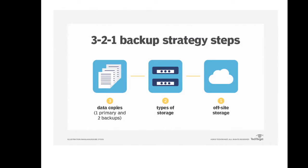Here's the 3-2-1 backup strategy illustrated. We have 3 copies: 1 primary and 2 backups. The 3 copies should be stored across 2 types of storage media — for example, disk and tape — and we also have 1 off-site storage. This is a typical 3-2-1 backup strategy used by most businesses.